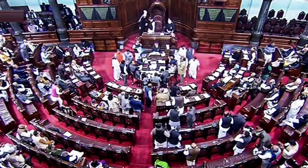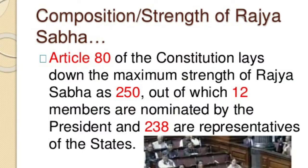Let us know about the composition of Rajya Sabha. Like the composition of Lok Sabha, here also you have to follow the number game: 250, 238, 12 and 245. The maximum strength of Rajya Sabha is 250 by the Constitution of India, out of which 238 members are represented from different states and union territories of Delhi and Puducherry. The rest 12 members are nominated by the President from among distinguished people in the field of science, art, literature and social science. At present, the strength of Rajya Sabha is 245 members.